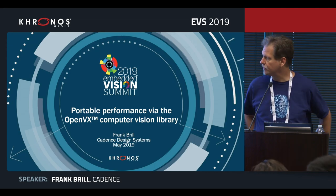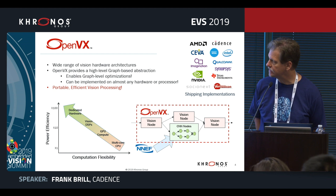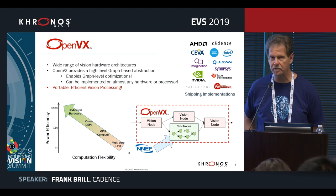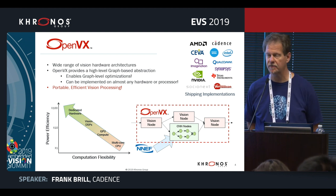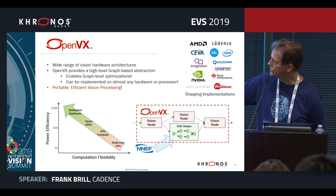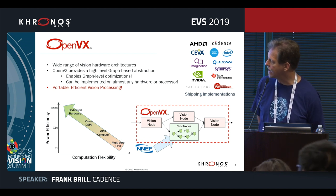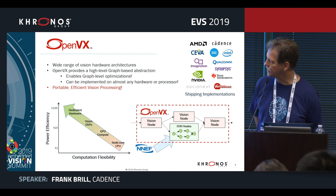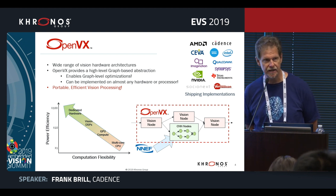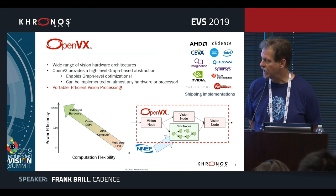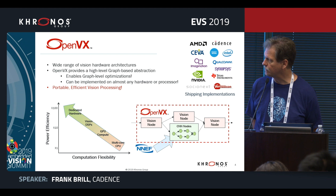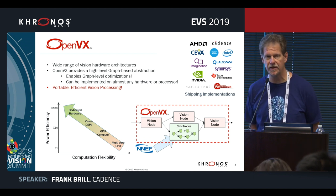OpenVX is a library for computer vision. The main goal of this library is to be performance portable across a very wide range of compute architectures. There are many different hardware alternatives with different trade-offs between efficiency and flexibility — from very flexible CPUs up through dedicated hardware that does a specific function — and we want to be able to run on all of these with portable, efficient code.